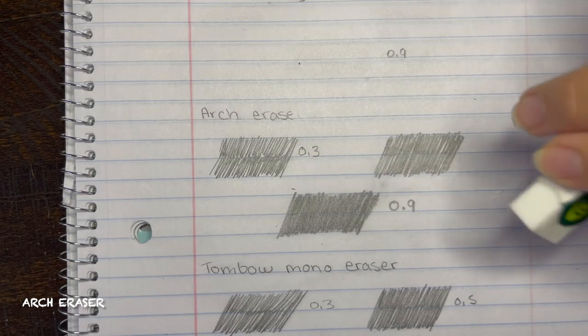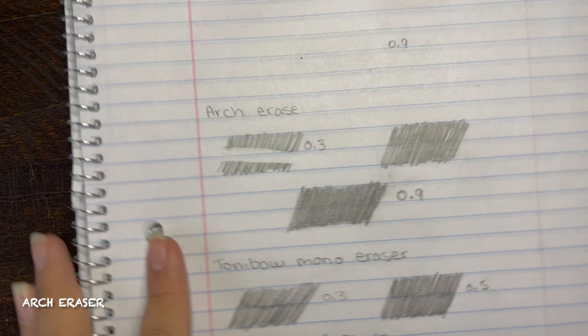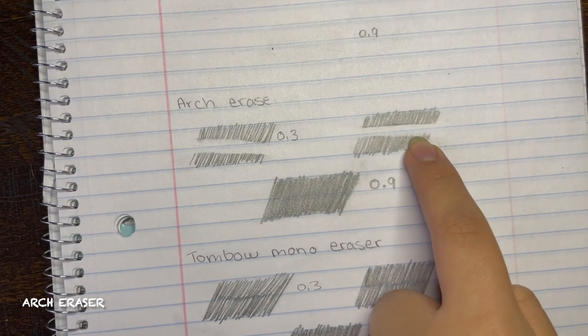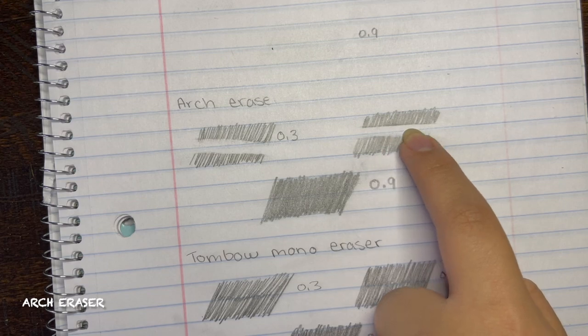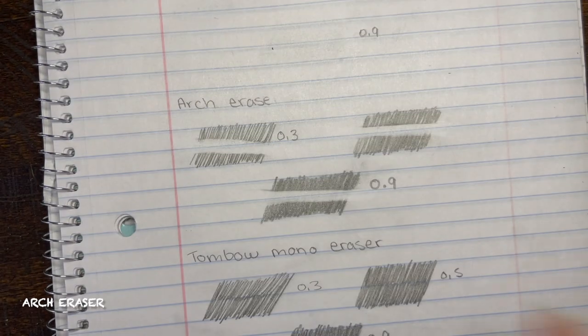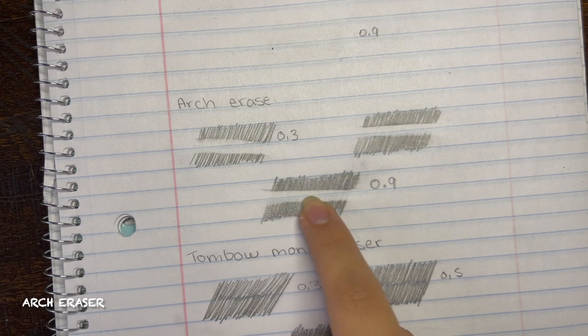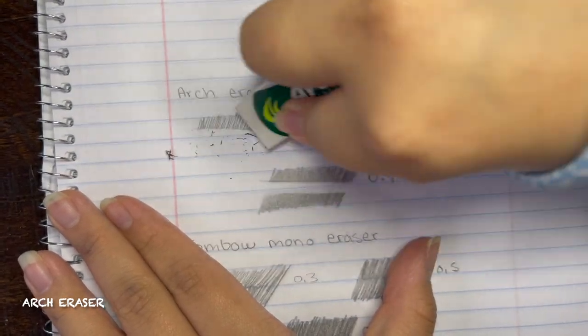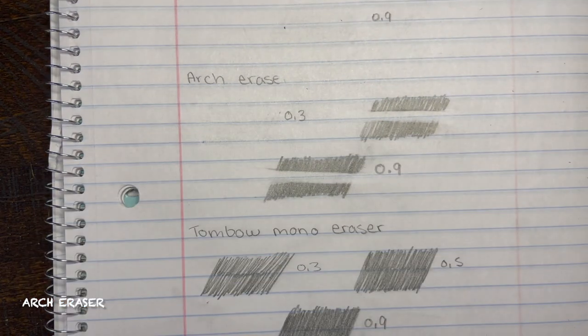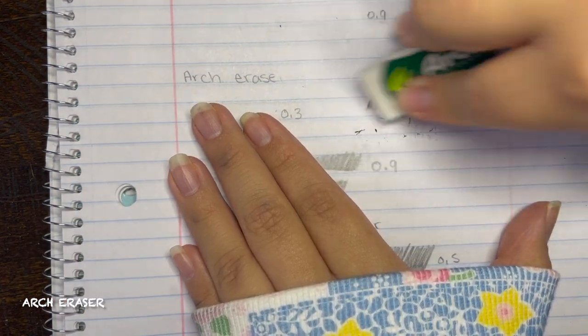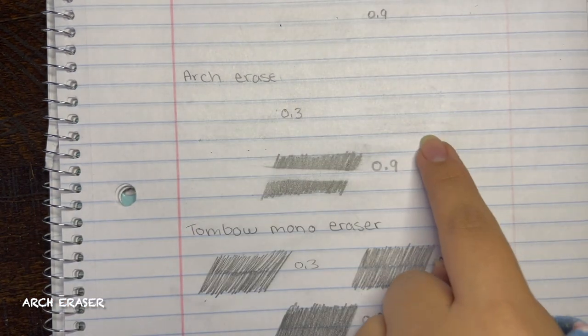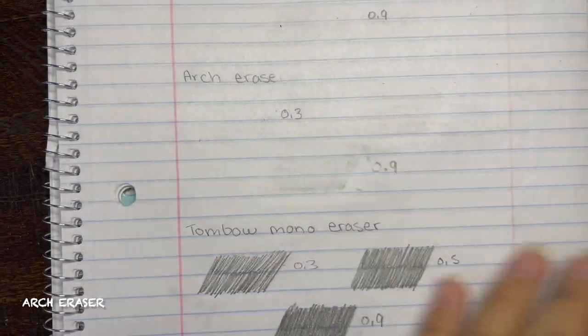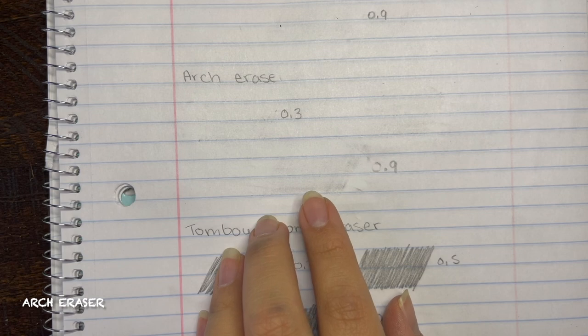And then when we erased the 0.3 it left out really clean lines. And also on the 0.5 it was really clean, really neat and it left no streaks. Then on the 0.9 it did unfortunately leave some streaks and some graphite but nothing too horrible. And then when we erased the entirety of 0.3 and 0.5 it was really clean and neat and no graphite left on the paper. But on the 0.9 there was still some left.